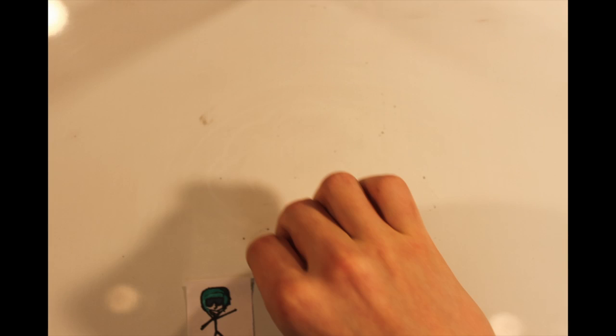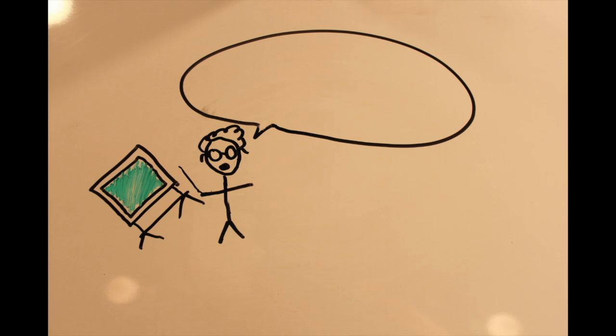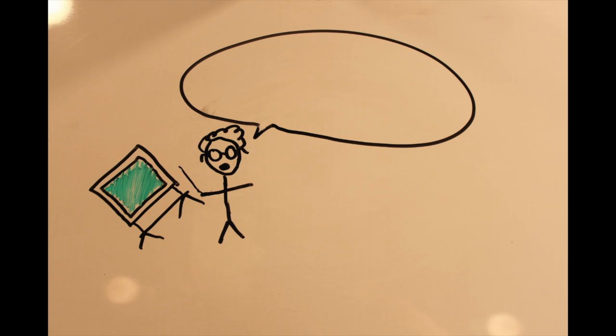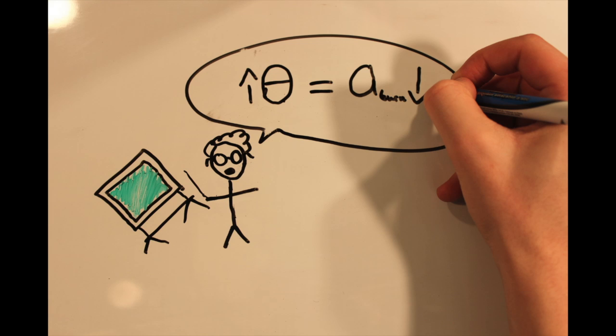So few besides professional snowboarders can perform pure carves regularly. The equation for this carve is the radius of the turn equals the radius of the side cut multiplied by the cosine of theta. This tells us that the greater the theta value, the smaller the arc of the turn becomes.